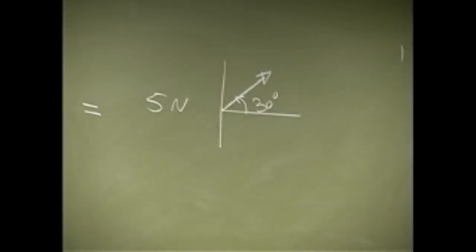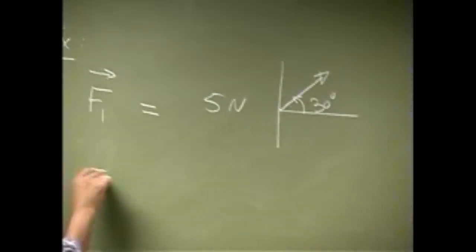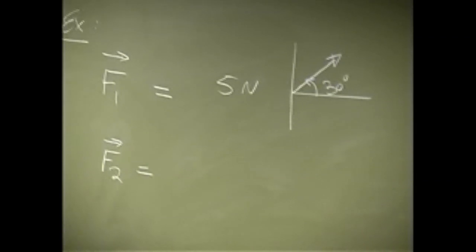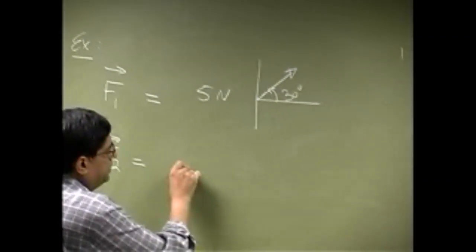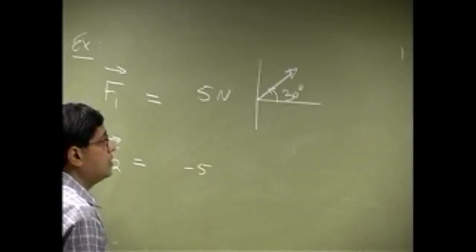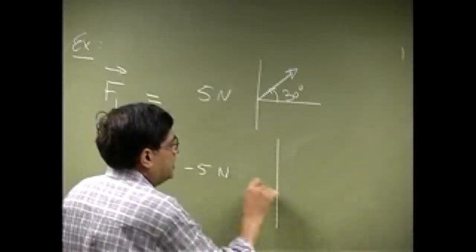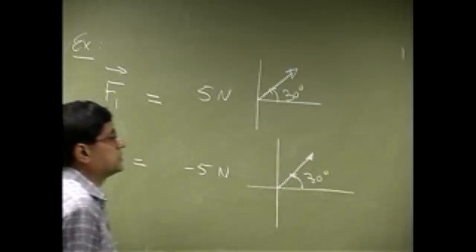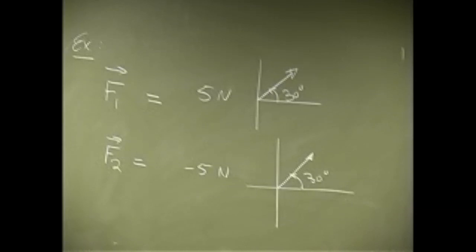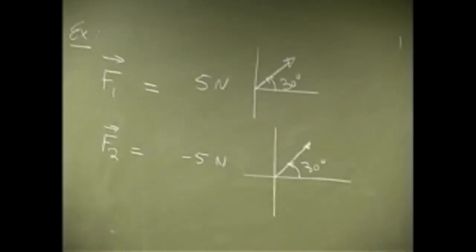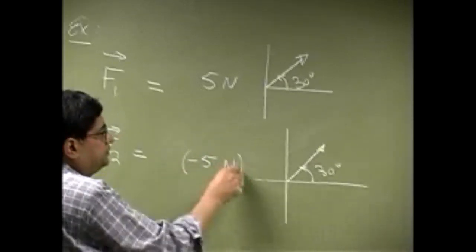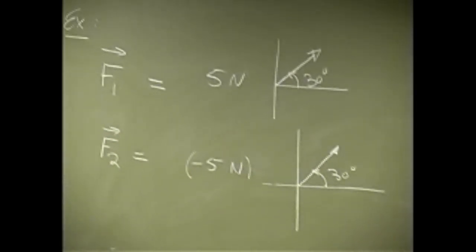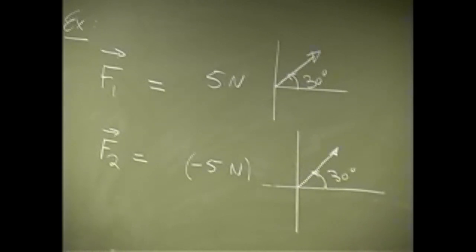So that's one case. Then we get another force F2, and this time the force is negative 5 newton, and that also makes an angle of 30 degrees from the x-axis. So we are looking at two different forces. Both have same direction but they have different magnitudes and they differ by the sign which is negative.